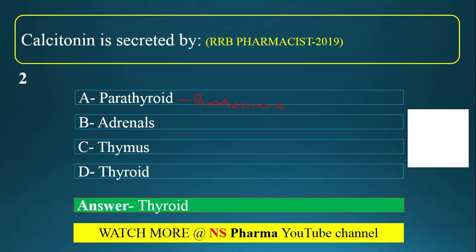For the adrenal gland, there are two parts: adrenal cortex and adrenal medulla. The adrenal cortex secretes aldosterone, cortisol, and androgen. The adrenal medulla secretes adrenaline and noradrenaline (epinephrine and norepinephrine).